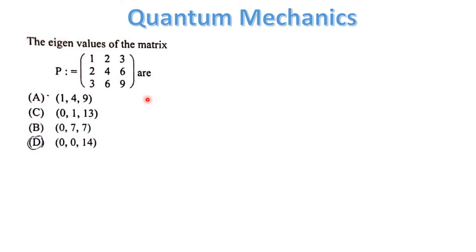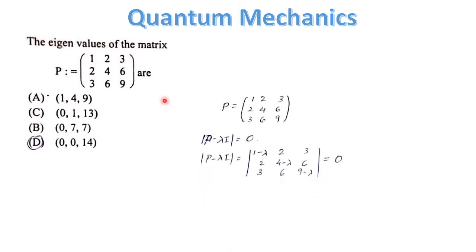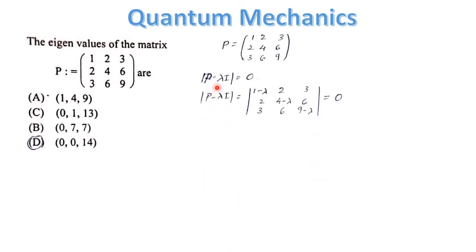To find the eigenvalues of the matrix, we need to write the characteristic equation: determinant of (P minus λI) is equal to 0.